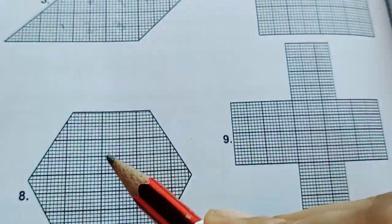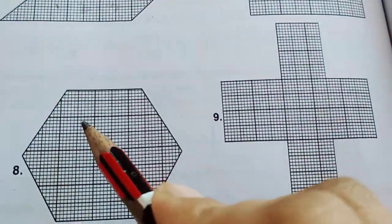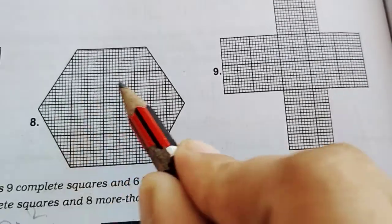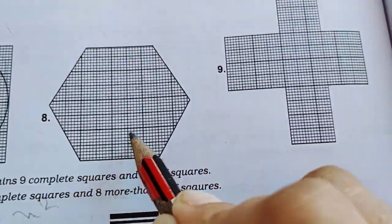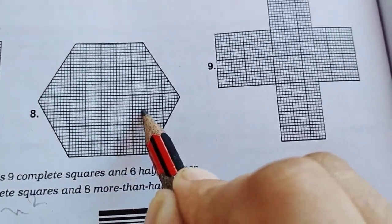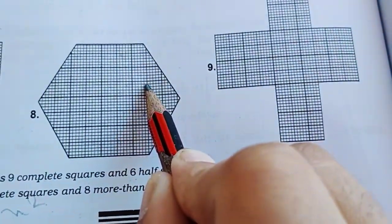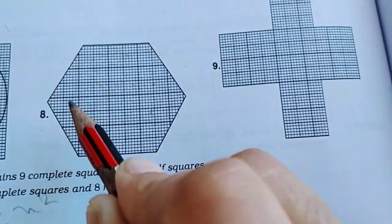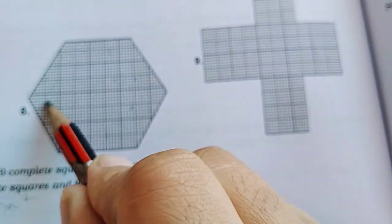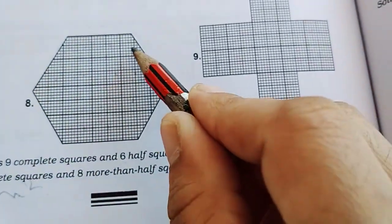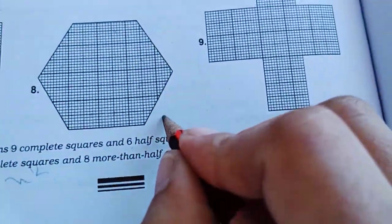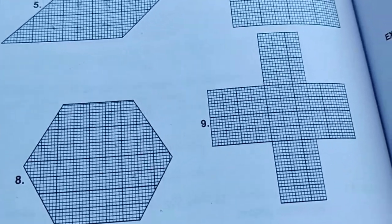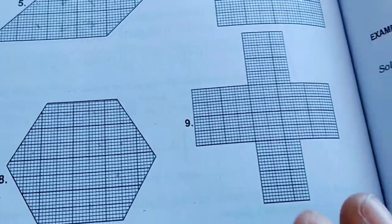Now let us count this figure: 1, 2, 3, 4, 5, 6, 7, 8 — this complete one — 9, and this complete one — 10. Now this becomes 11, this becomes 12, 13, and 14. So the area of this figure is 14 centimeter square.